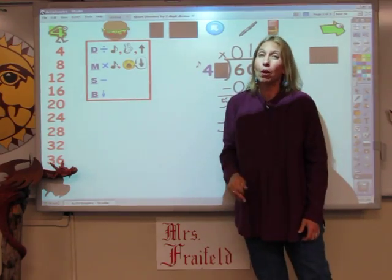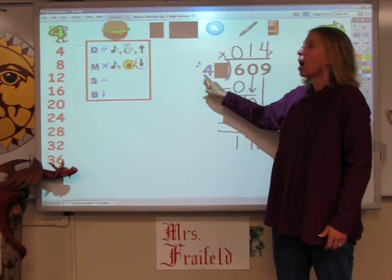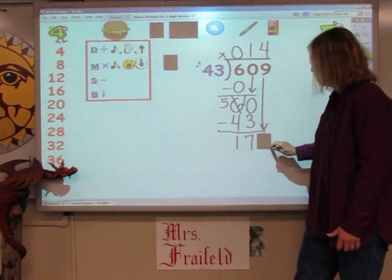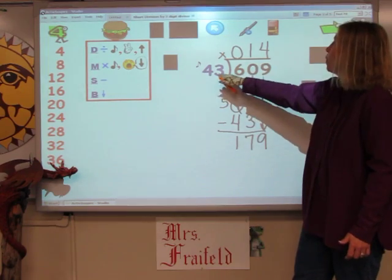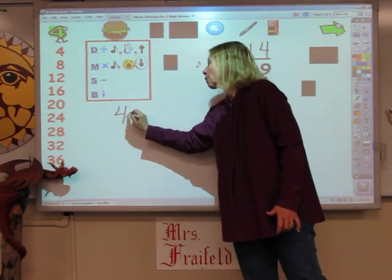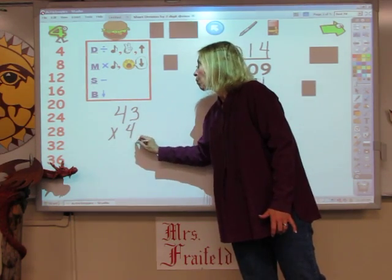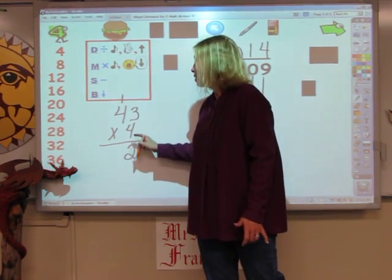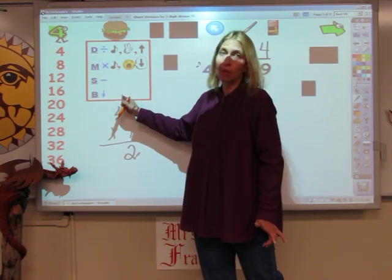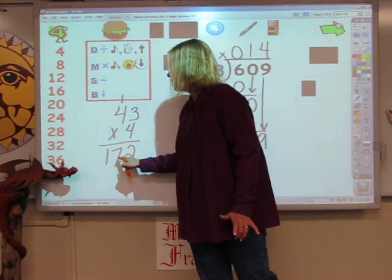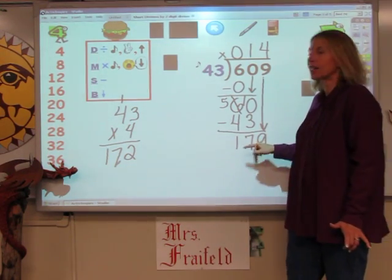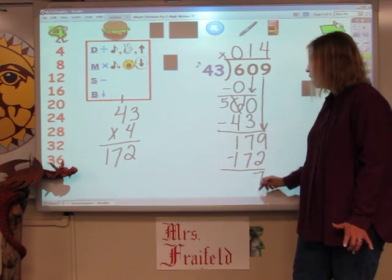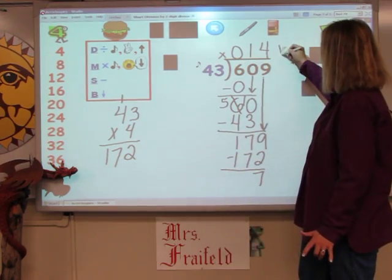Now I'm going to multiply. But remember, I'm not going to multiply this 4 by 4 — I've got to take the covers off and multiply 43 times 4. I sing my 4 song for 3 fingers — that's 12. I sing my 4 song for 4 fingers — that's 16, plus the 1 is 17. If this number is smaller than this one, I can subtract. I have 7 left over. There's nothing else to bring down, so that makes it my remainder.